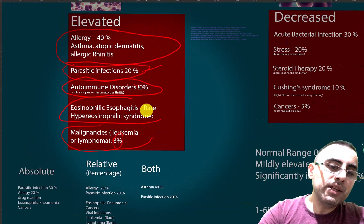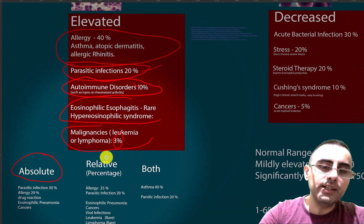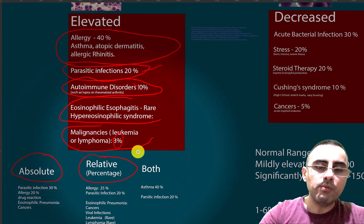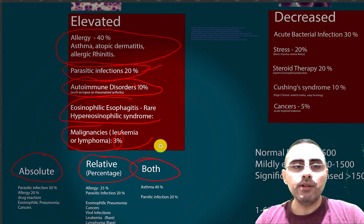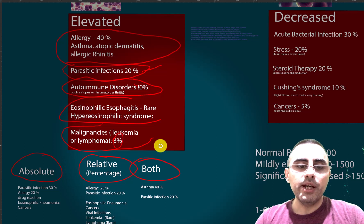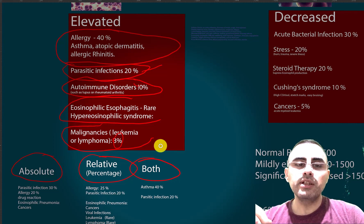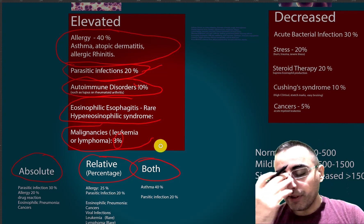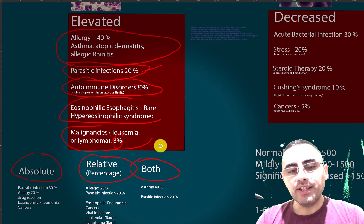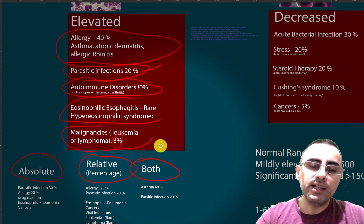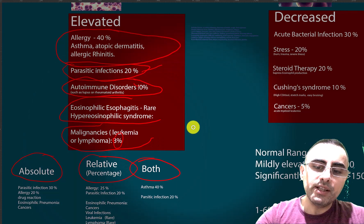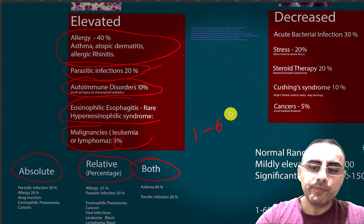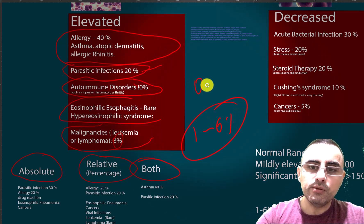Elevated eosinophils can be absolute, relative, or both. Absolute elevation means the eosinophil count is elevated. Relative elevation means the percentage within white blood cells is elevated. The normal percentage is 1 to 6%, and the normal count is 0 to 500 per microliter.